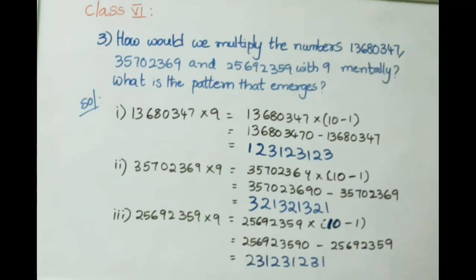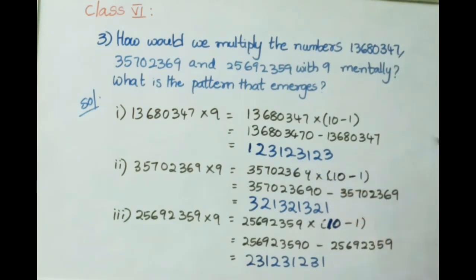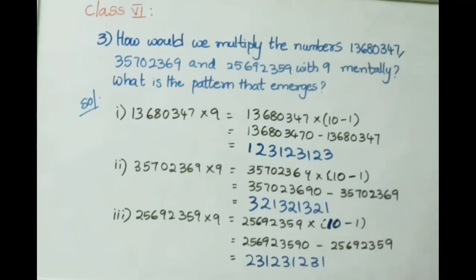If we observe all three answers — 12 crore 31 lakh 23,123; 32 crore 13 lakh 21,321; and 23 crore 12 lakh 31,231 — we notice that only the digits 1, 2, and 3 are repeating in different arrangements. This repeating pattern of 1, 2, 3 in various orders is the emergent pattern from multiplying these special numbers by 9.